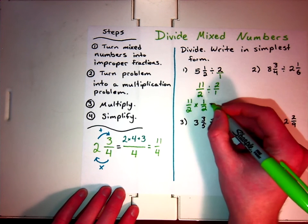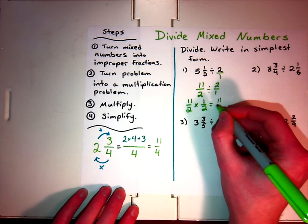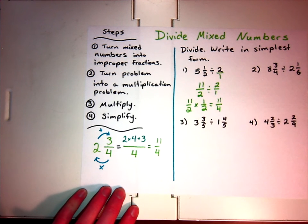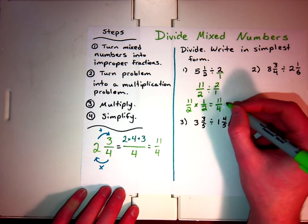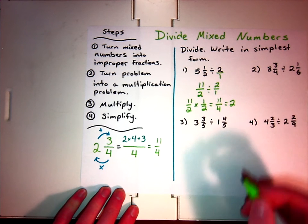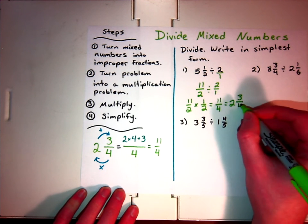So, let's multiply. 11 times 1 is 11. 2 times 2 is 4. I end up with an improper fraction. I need to write it in simplest form. Well, 4 is going to go into 11 twice. The remainder would be 3, so that's my numerator. And 4 is going to be my denominator.